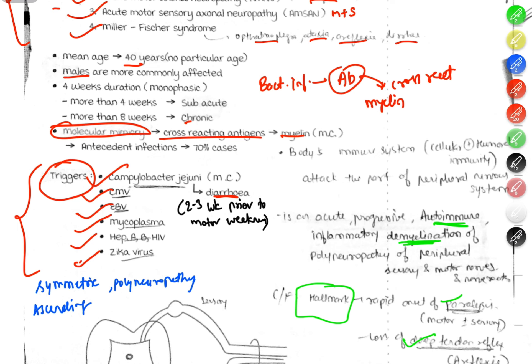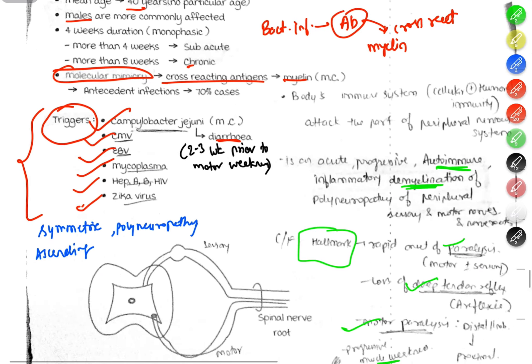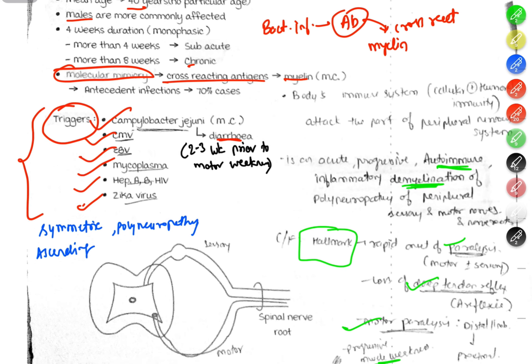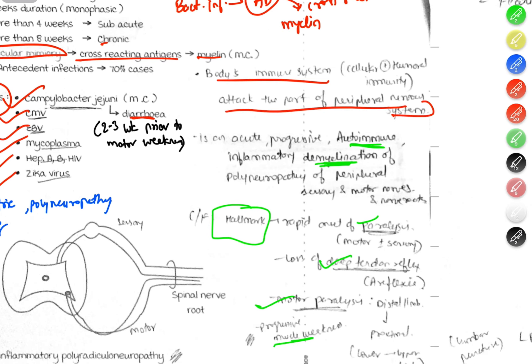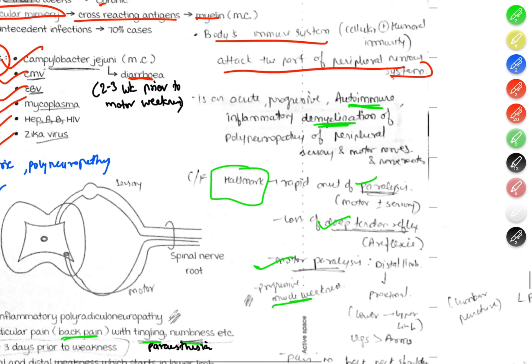The patient may show history that two days before motor weakness, there was diarrhea, which suggests GBS. After infection, the body's immune system attacks part of the peripheral nervous system. GBS is an acute progressive autoimmune inflammatory demyelination of peripheral sensory and motor nerves.